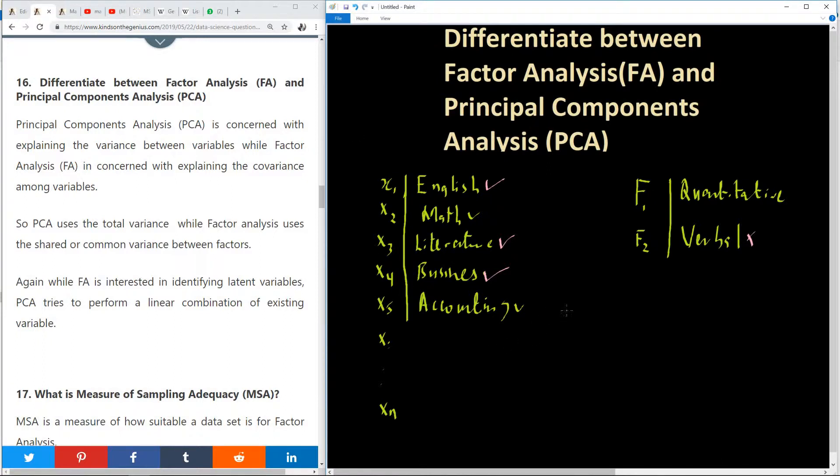Now when it comes to PCA, we're also talking of something similar. We're also reducing the variables, but this time we are reducing it into principal components PC1 and PC2. So PCA uses the total variance, while factor analysis uses shared or common variance between factors.